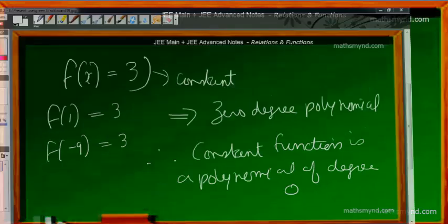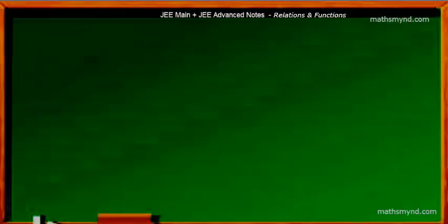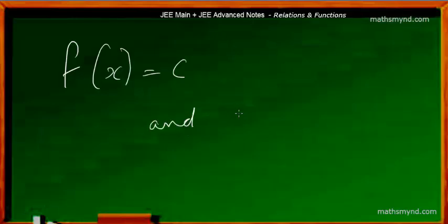We may also write the constant function as f(x) = c, where c is a constant, and c is of course not equal to 0.